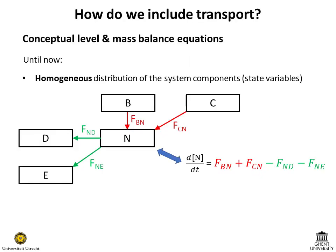First, we look at transport processes at the level of the conceptual diagram and mass balance equations. We start by considering one specific state variable, which can be, for example, the concentration of a nutrient in a water column, n.